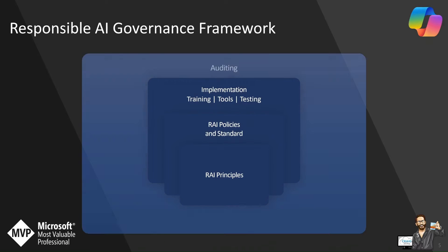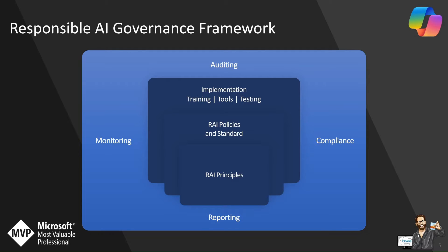The Responsible AI governance framework is based on six principles that Microsoft have built their foundation around. This framework guides the deployment of AI technology. Starting with auditing — in the context of Responsible AI, auditing involves examining AI systems to ensure alignment with established ethical guidelines and standards. It's about systematically reviewing the AI lifecycle from data collection to model deployment, identifying potential bias, ethical risks, or areas where privacy may be compromised.